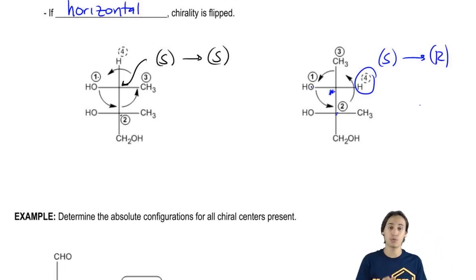Now keep in mind, for Fischer projections, I'm never swapping groups. So I'm not swapping out one and four or anything like that. All I'm doing is I'm just taking the chirality and I'm flipping it if it happens to be horizontal, or I'm keeping it if it happens to be vertical.